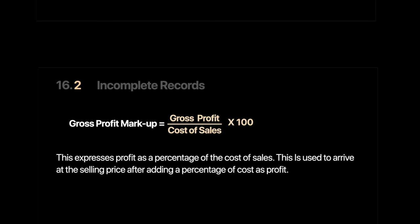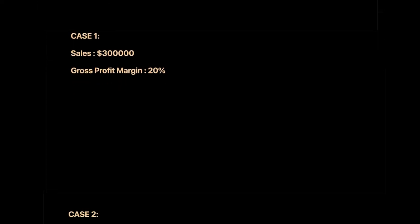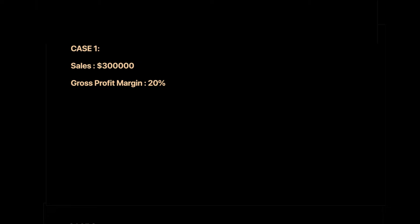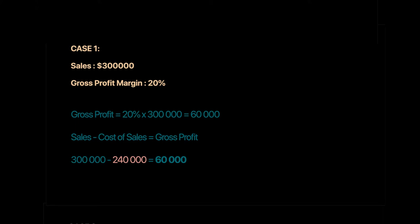Let's go through calculations that can appear on the exam. Case 1: Sales = 300,000 and gross profit margin = 20%. Since margin is a percentage of sales, gross profit = 20% × 300,000 = 60,000. With sales of 300,000 and gross profit of 60,000, cost of sales = 240,000.